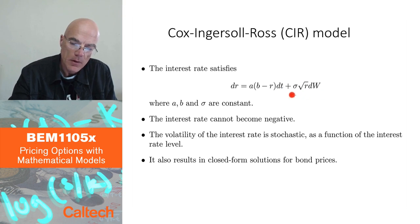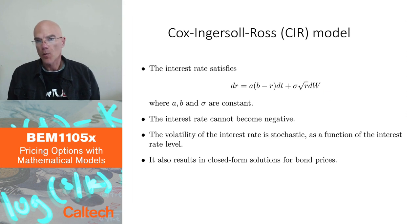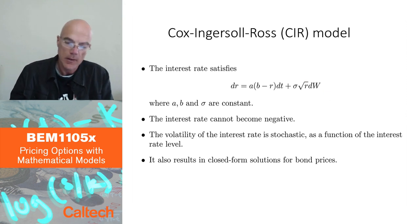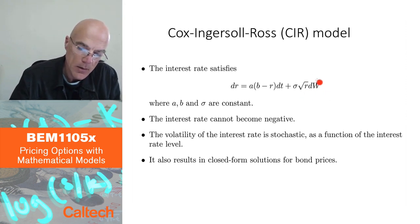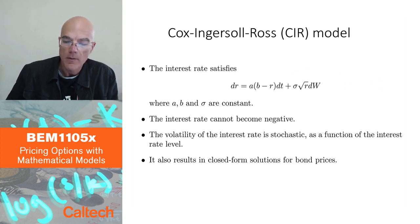The diffusion term, the Brownian motion term, they put square root of r here. This will make the process never go negative. Why? Because if it hits zero, if r hits zero, this will become zero. And here, if it hits zero, it will become abdt. a times b is positive. It will be pushed up. So if it hits zero, it just gets pushed up. It may hit zero, but it will never go negative.